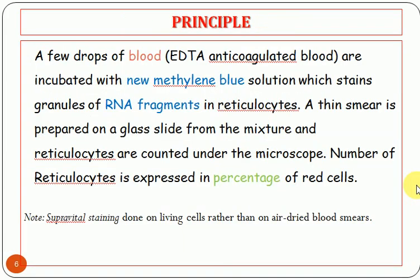The principle of the test: new methylene blue (supravital stain) is mixed with blood and incubated. The new methylene blue gives a blue or purple color to the RNA fragment in the reticulocyte. After incubation, a smear is made from the mixture, allowed to air dry, and observed under the microscope. Reticulocytes are counted and expressed as a percentage of red cells.